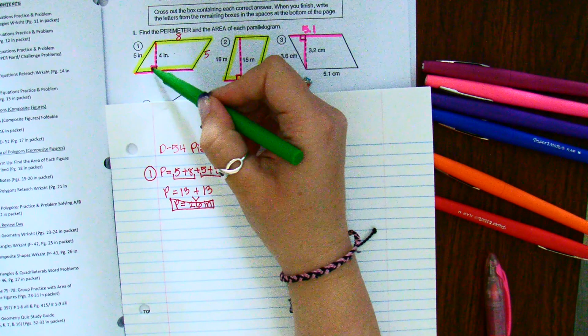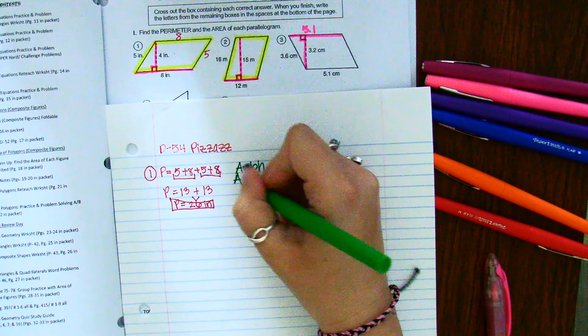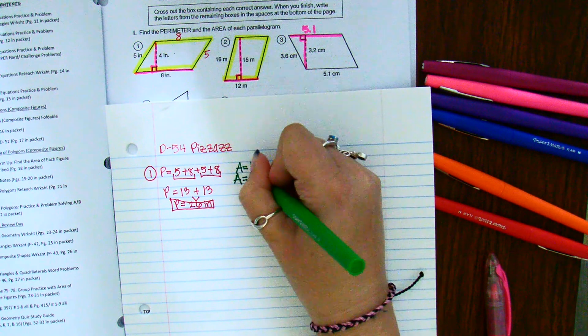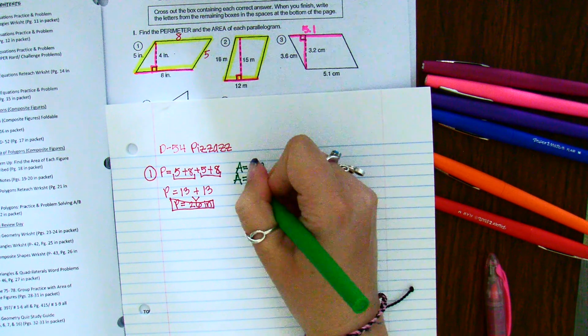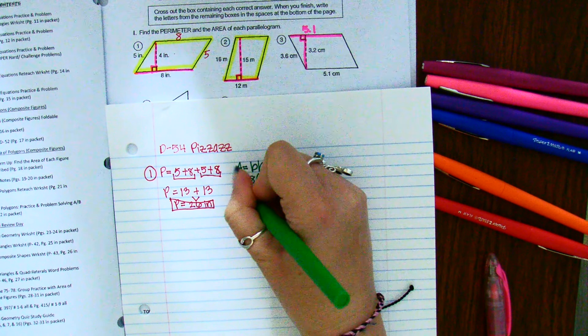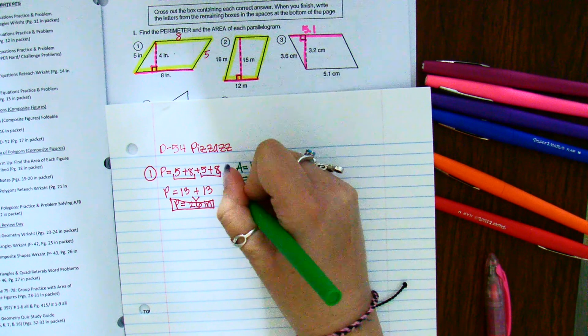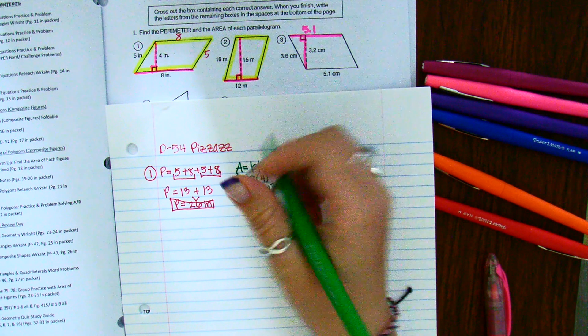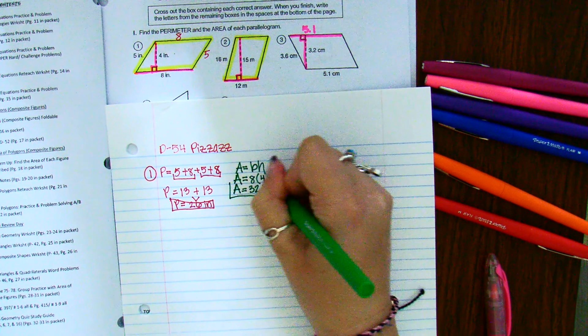Sometimes it helps if I highlight it, and that connects this line, so the base of eight, to my height, which my height is four. So now you just simplify eight times four is 32. And for area, my units are always inches squared.